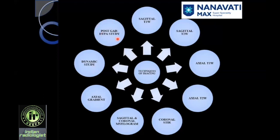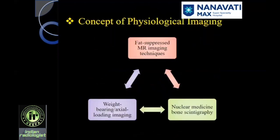Post-contrast study is necessary in post-operative spine where you are looking for epidural fibrosis or arachnoiditis. In the immediate post-operative period you are looking for hematoma, abscess, or discitis osteomyelitis. In that situation, post-contrast fat-sat T1 with a slice thickness of 3 or 4 mm is necessary. You must also remember the relatively new concept of physiological imaging, which requires fat-suppressed MR imaging techniques pre- or post-contrast. If it is pre-contrast, you require fat-sat T2; if post-contrast, fat-sat T1. This is required to look at edema associated with localized pain.